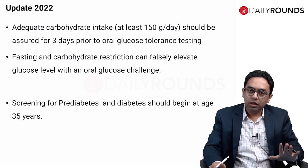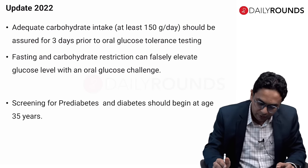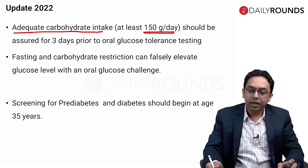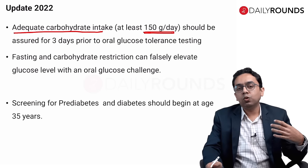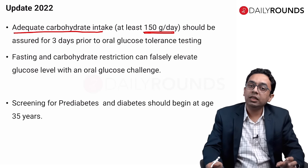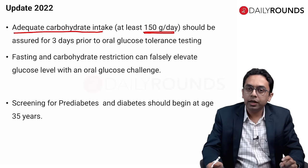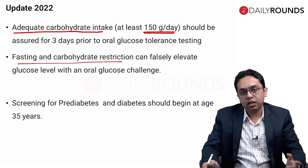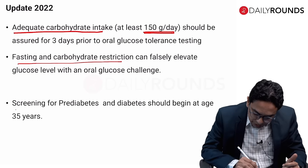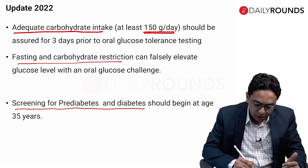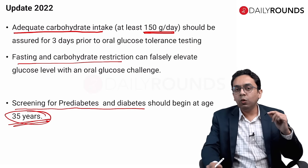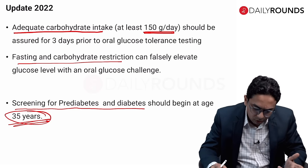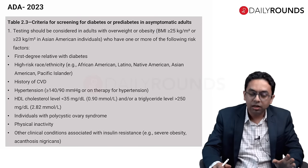For screening of diabetes or pre-diabetes using OGTT, a 2022 update requires adequate carbohydrate intake — at least 150 grams per day — for three days prior to testing, because a very low carbohydrate diet can falsely elevate OGTT results. Also updated in 2022: screening for pre-diabetes and diabetes should begin at 35 years, changed from 45 years in the 2021 guideline. This 35-year cutoff remains the same through ADA 2024.